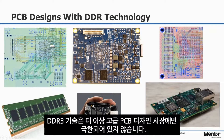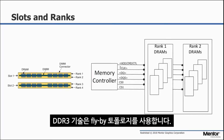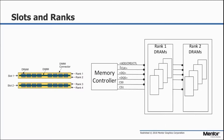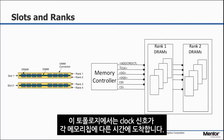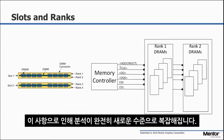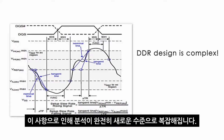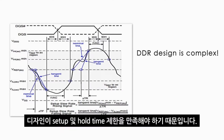DDR3 technology is no longer restricted to the high-end PCB design market. DDR3 uses the flyby topology where the clock arrives at each memory chip at a different time. The memory chips can be arranged in any combination of number of slots and ranks. This adds a whole new level of complexity to the analysis as the design needs to meet setup and hold time restrictions.